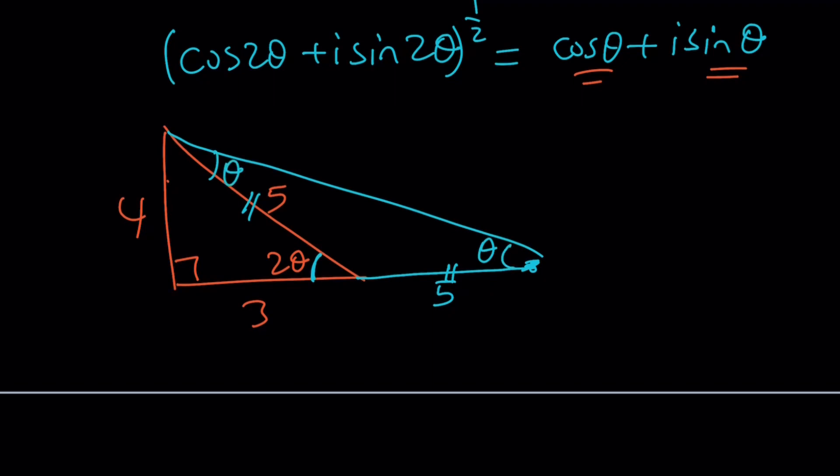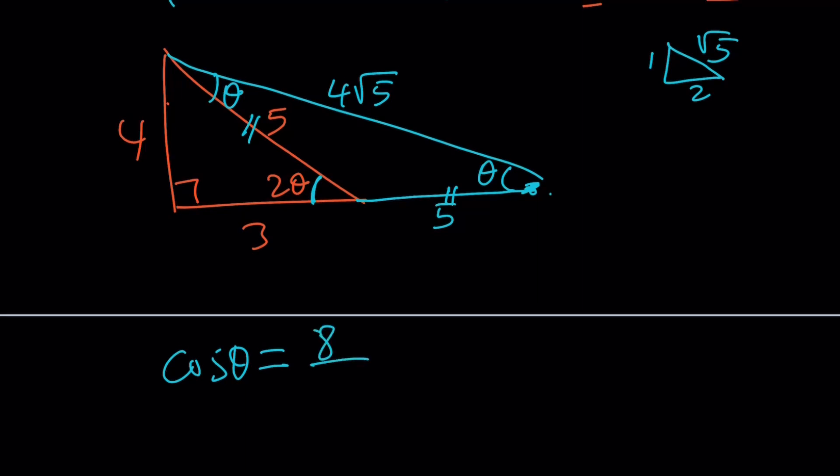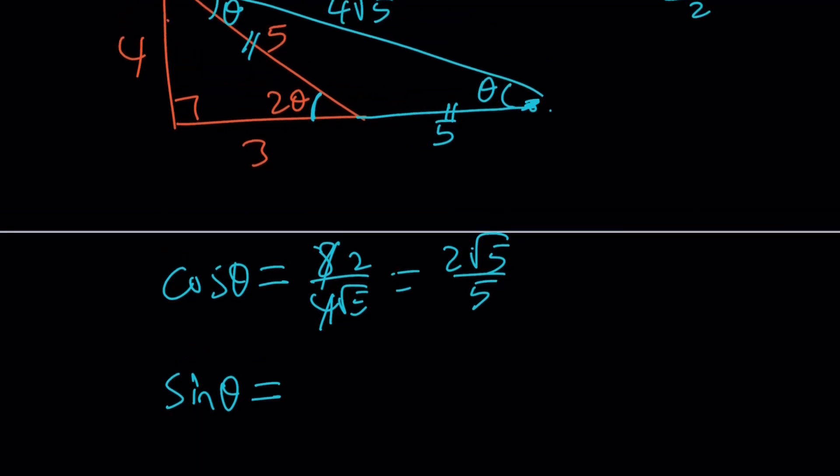Now you got a 4 and an 8. So this will be 4 root 5. Because if you had a 1 and 2, that would be root 5. If you have 4 and 8, that would be 4 root 5. Here's the thing. You can find cosine theta from here. Cosine theta is 8 over 4 root 5, which can be written as 2 root 5 over 5. And then sine theta is just going to be 4 over 4 root 5, which is 1 over root 5, or root 5 over 5.